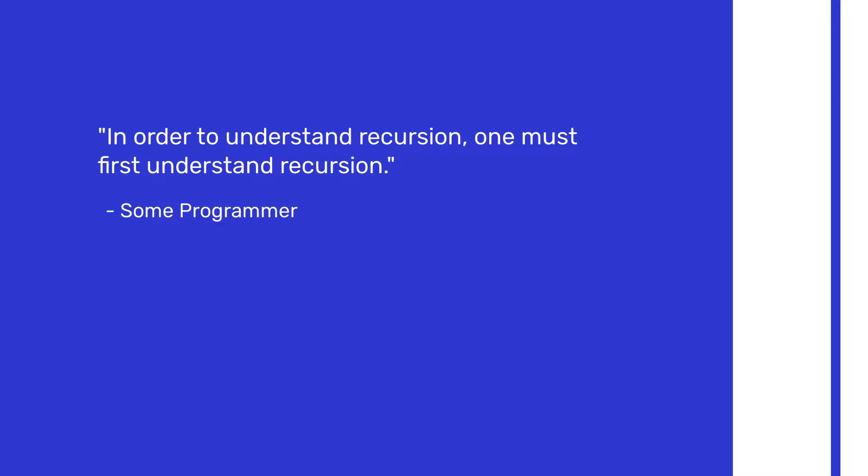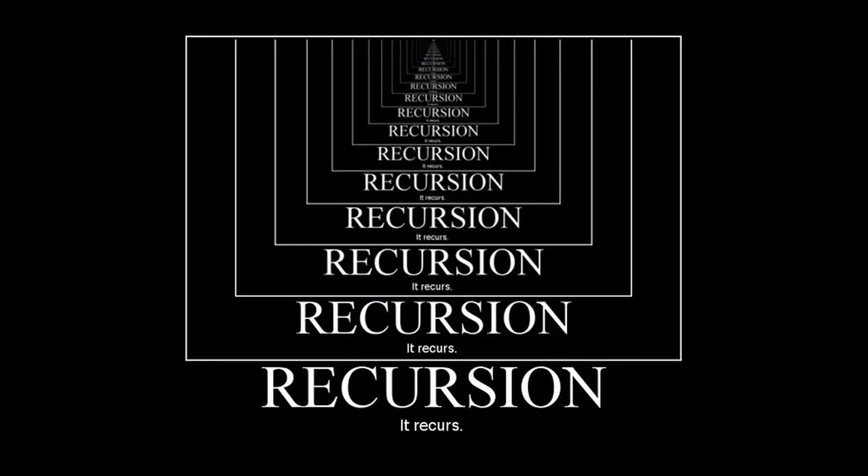So if you don't know what recursion is, it's like a function that calls itself. It's kind of like solving a problem by solving a smaller version of that problem. The way it works is when you pass in your argument, it will call the same function with a smaller argument. And then in that second call, it's going to call it again with a smaller argument, and it just keeps calling itself until it gets to a baseline where it stops calling itself.